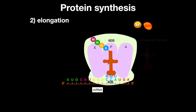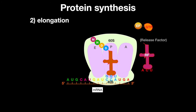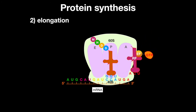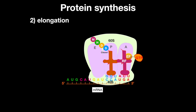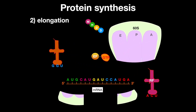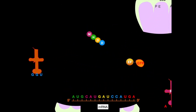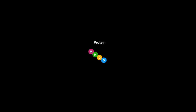Finally, a stop codon is reached. A tRNA-like structure called release factor binds to the ribosome in the A site, where it cleaves the peptide from the ribosome in the P site. The ribosome constituents dissociate from each other and are recycled, leaving the translated protein.